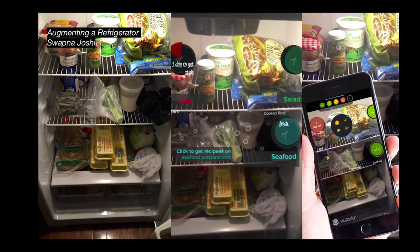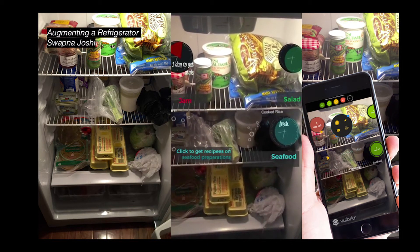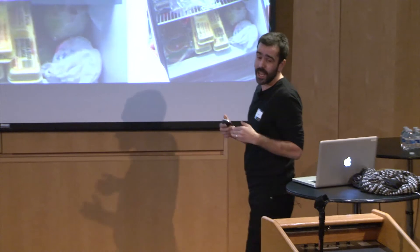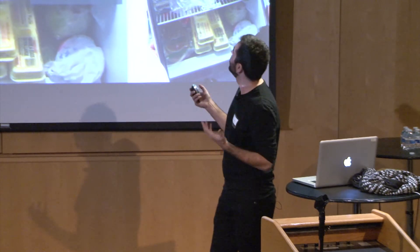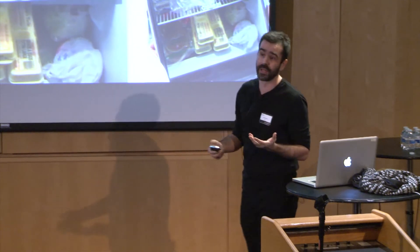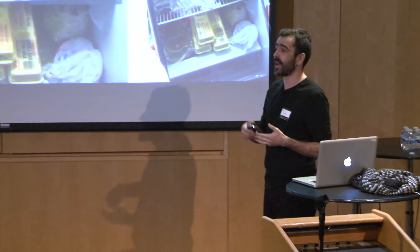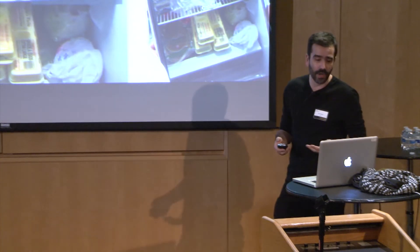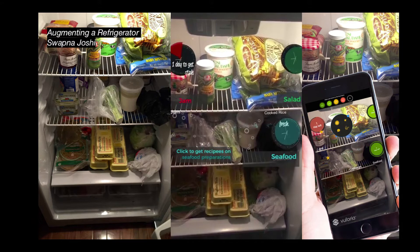We can also bring assistance to the kitchen and the refrigerator. Swapna Joshi did this project where she really explored the assistant inside the refrigerator. It tells you what items are going rotten, or are fresh, or are ready to go, and what else you can cook with them — what you can make if you have eggs whose due date is closing and other ingredients on hand.